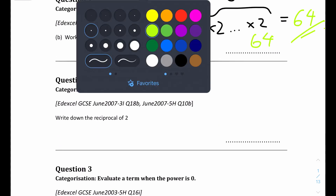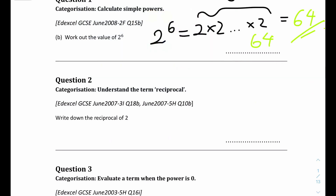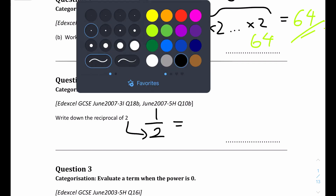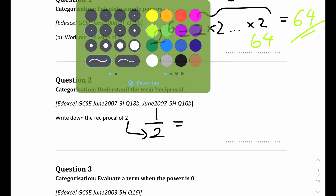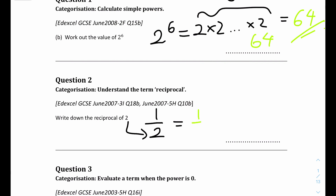For question 2, write down the reciprocal of 2. The reciprocal of any number is just 1 over that number. So the reciprocal of 2 will be 1 over 2. The answer is just 1 over 2, or one half.